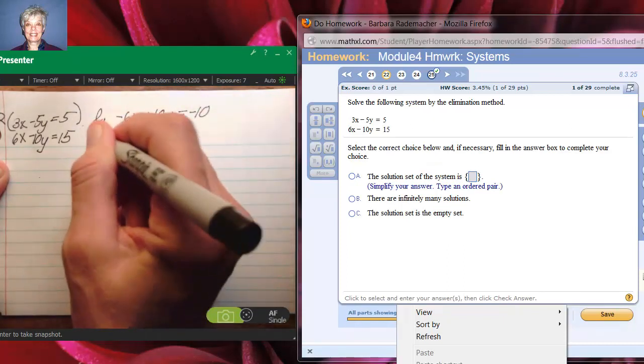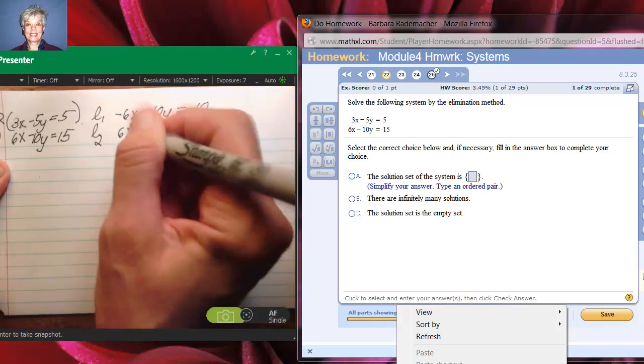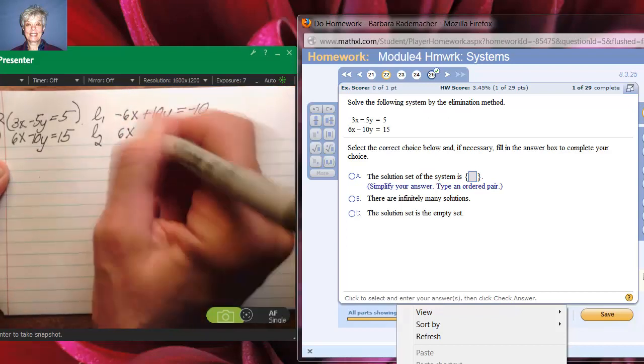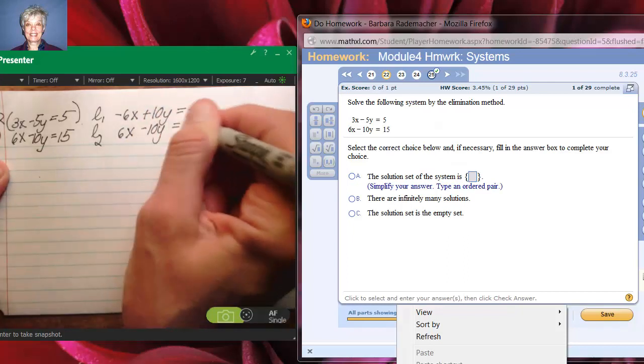Line 2 is going to stay the same. I don't have to do anything to it: 6x minus 10y equals 15. Now I can get rid of my x's.